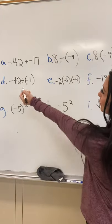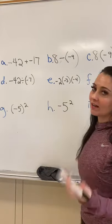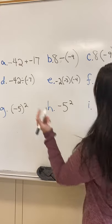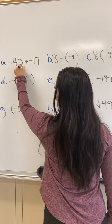So starting off with A, negative 42 plus negative 17. Two negative numbers, you just add the numbers together and keep that negative, so your answer is negative 59.